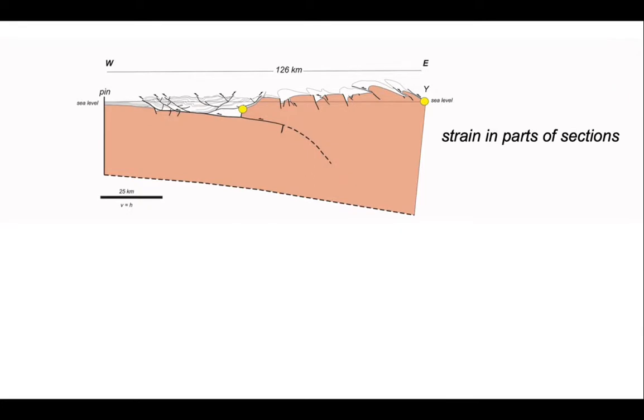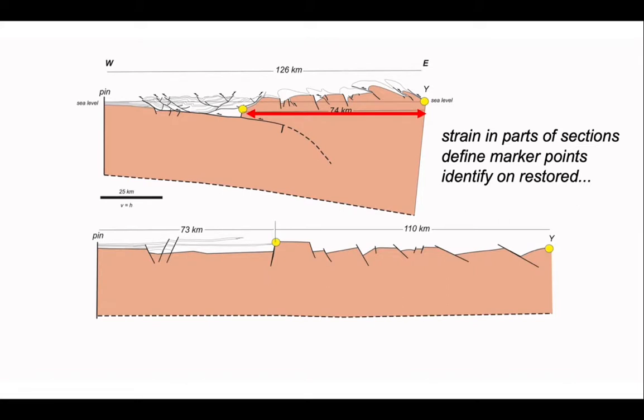We can also apply this to look at strain in specific parts of the section so we can see whether some parts of our cross-section are more strained than others. And we can do this between marker Y and a place about halfway along our cross-section. This length here. So we must be careful to define our marker points. And make sure we can chart them on the restored section. So therefore we can make a measurement on the restoration that is directly comparable with that on the deformed state.